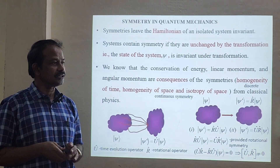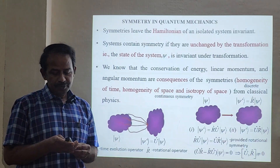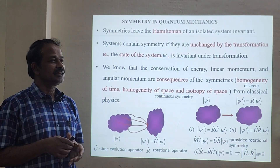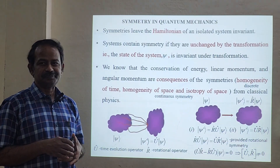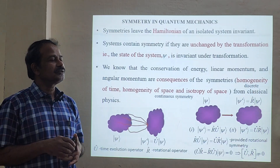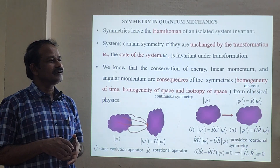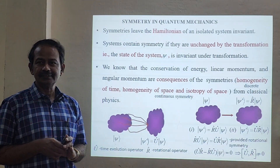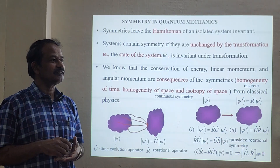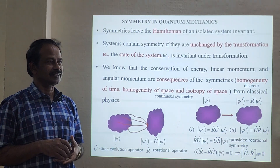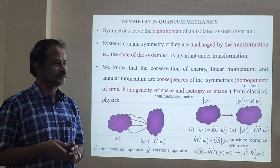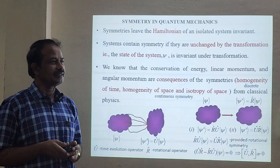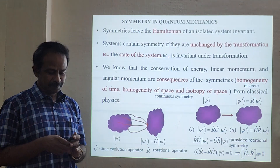Symmetry is rooted right from de Broglie. De Broglie says: if light has a dual character, then matter also will have a dual character. So nature loves symmetry — that was a concept put forth by de Broglie in 1925.